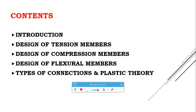We will then learn the Design of Compression Members like columns — how to connect two different columns, including built-up sections, laced and battened systems. Design concepts of columns subjected to uniaxial bending, column splicing, column base, and slab base will also be covered. The various design concepts of compression members will be learned as per the codal provisions.